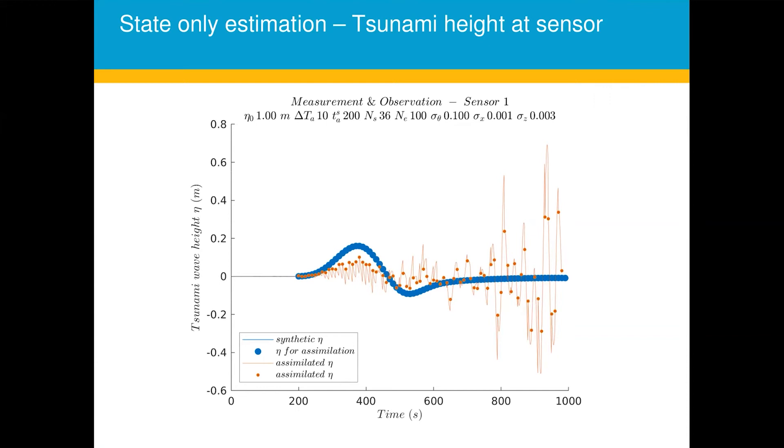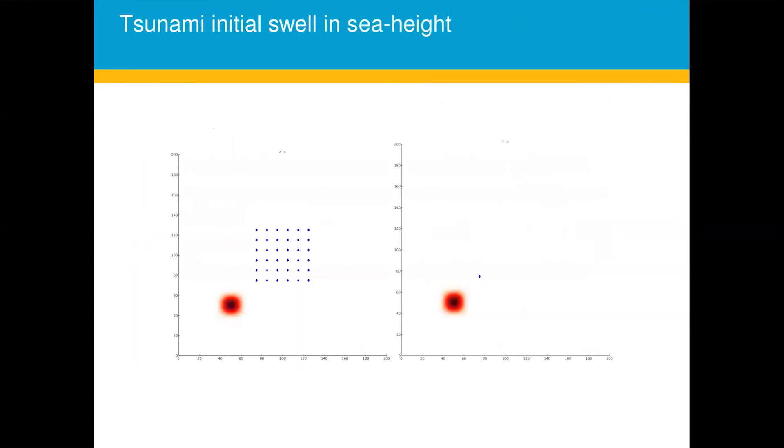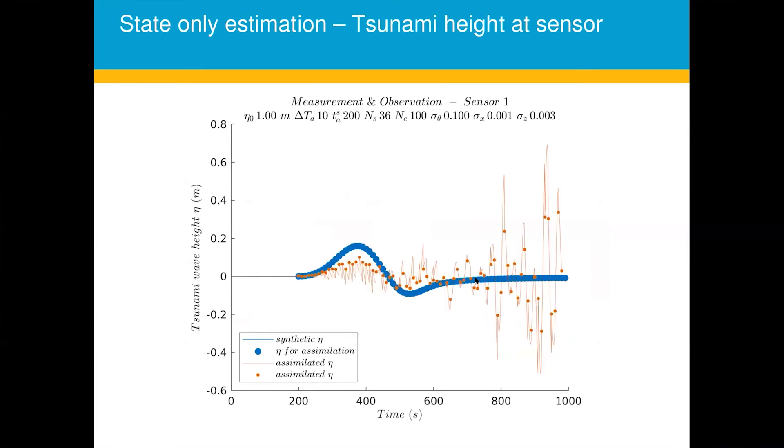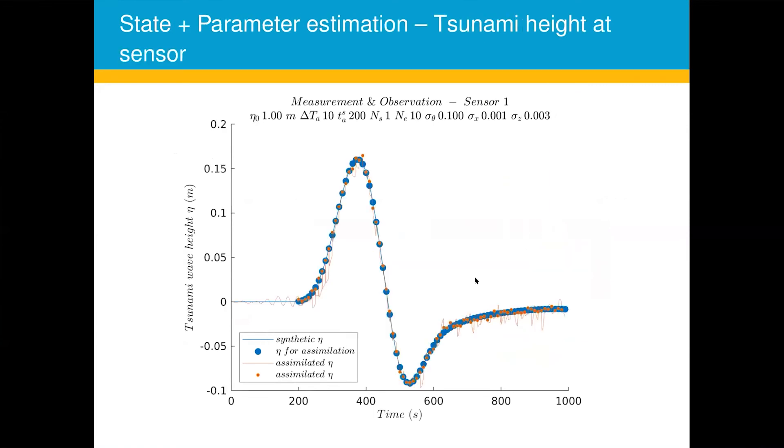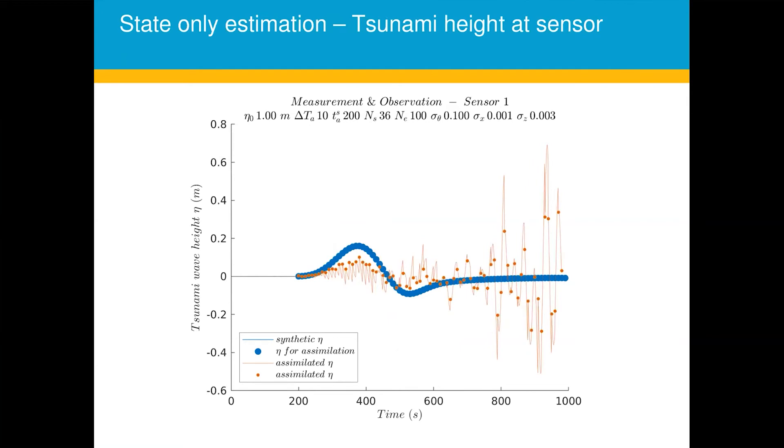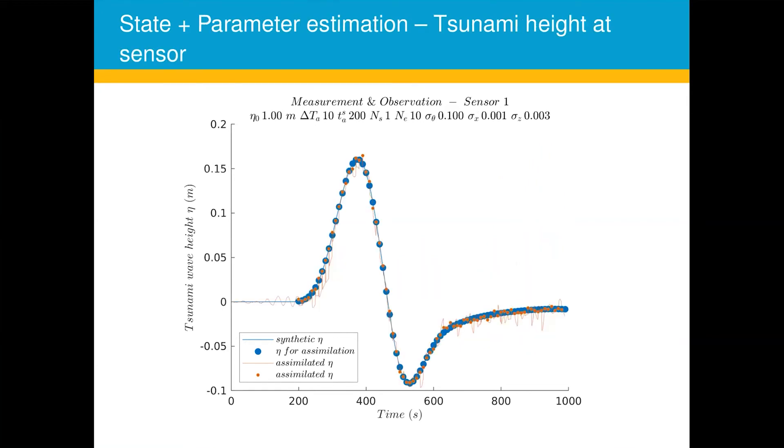So we tried with parameter included in the estimation. And for that I don't use 36 sensors but I just use one sensor. So this is the same sensor, same tsunami waveform, and the orange dots show the assimilated waveform. And we can see that it kind of matches the waveform very nicely. This is only with 10 ensemble size while this was with 100 ensembles. So there is definitely an improvement, an improvement if we include the parameters in the tsunami data assimilation.